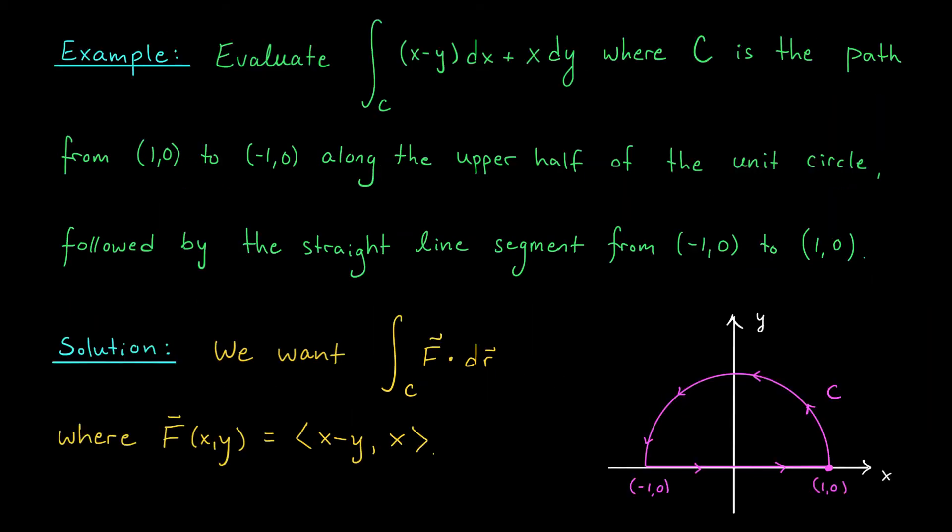Suppose that we're trying to evaluate this line integral. The line integral along C of X minus Y dx plus X dy, where here C is the path from 1, 0 to minus 1, 0 along the upper half of the unit circle, followed by the straight line segment from minus 1, 0 to 1, 0. So C is this path right here. We start at 1, 0. We follow the unit circle to minus 1, 0, and then we take this straight line segment back home. We are trying to calculate the line integral of F along the curve C, where here F is the vector field with components X minus Y and X. It's this vector field you see here.